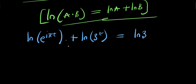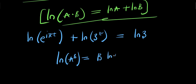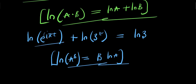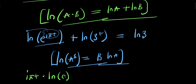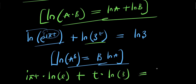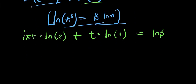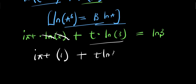Right now, if you have the natural log of a to the power of b, this equals b times the natural log of a. We apply this same property here, meaning the i·π·t will come out in front of the natural log. So we have i·π·t times the natural log of e, plus t times the natural log of three, equals the natural log of three. Since the natural log of e is one, we have i times pi times t times one, plus t times the natural log of three, equals the natural log of three.